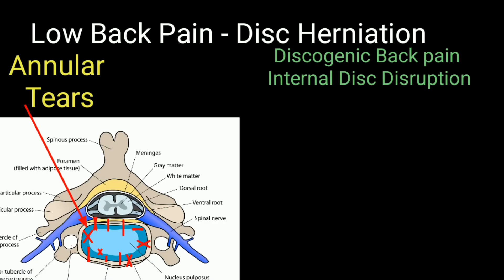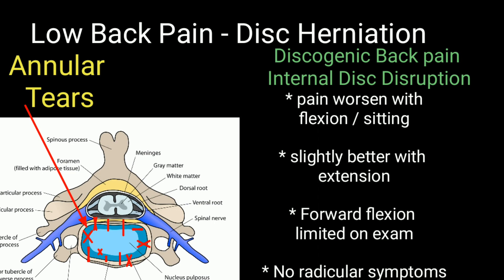Discogenic back pain involves internal disc disruption and annular tear. Pain worsens with flexion in the sitting position and is slightly better with extension. Forward flexion is limited on examination, with no radicular symptoms.